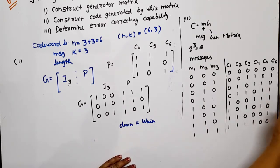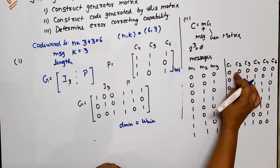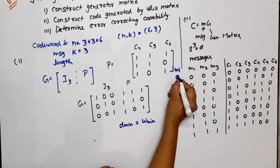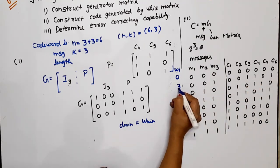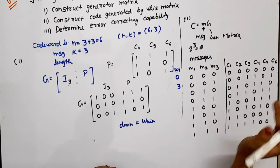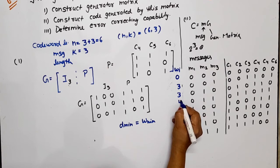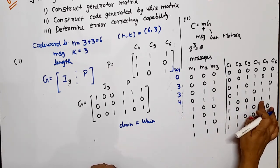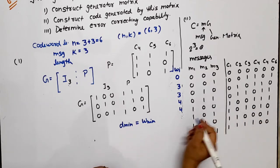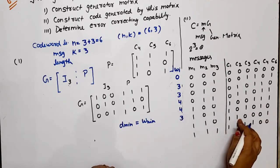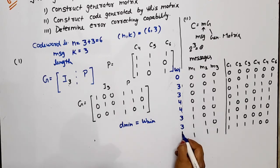Calculating the weights of all non-zero code words: 001101 has weight 3; 010110 has weight 3; 011011 has weight 4; 100111 has weight 4, wait — 1,0,0,1,1,1 has weight 4; 101010 has weight 3; 110001 has weight 3; 111100 has weight 4. So the minimum weight, excluding zero, is 3. Therefore D_minimum = 3.